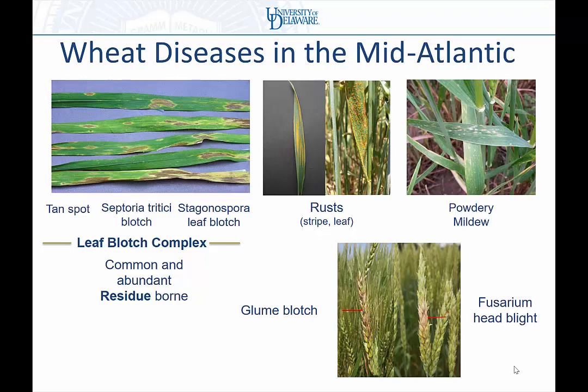In addition to foliar diseases, we have head diseases that cause issues with grain quality and test weight. Glume blotch is cropping up — it's caused by the same pathogen that causes Stagonospora leaf blotch. One affects foliage, one affects the head. The infection on the head reduces photosynthesis and limits carbohydrates for grain fill, leading to lower test weights. And of course, fusarium head blight is one everyone's managing for. Besides reduced kernel size and test weight issues, there are the mycotoxins — that's the big concern in the mid-Atlantic region.